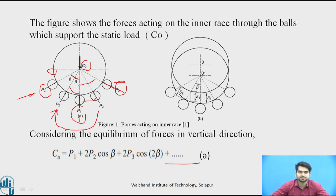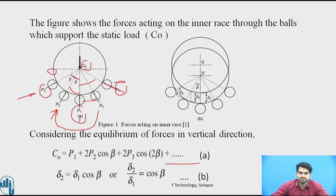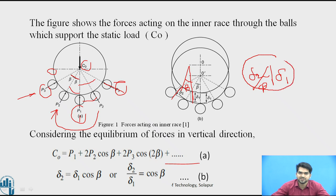Now observe the relation between delta₁ and delta₂ — the deflections in the races. Since the balls are equally spaced, delta₁ and delta₂ make an angle beta. From this geometry, the relation is delta₂ = delta₁ · cos(β), giving us delta₂/delta₁ = cos(β). This is equation (B).